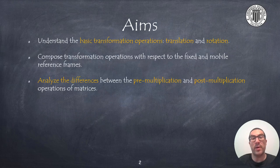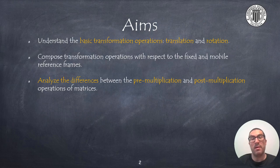The aims of the presentation are, on the one hand, to understand basic transformation operations such as translation and rotation in each of the axes of a reference frame. Then we will focus on the composition of transformation operations, which can be done with respect to the fixed frame — the one that doesn't change — or the mobile frame, the one that changes as we apply transformations. Finally, we will analyze the importance of understanding the difference between pre-multiplication and post-multiplication operations of homogeneous transformation matrices.